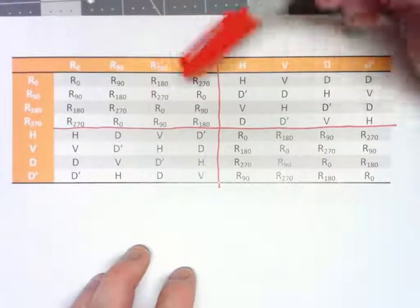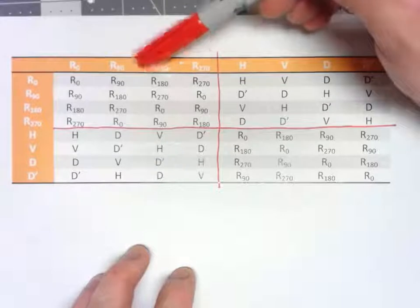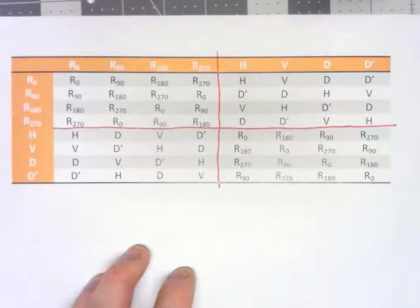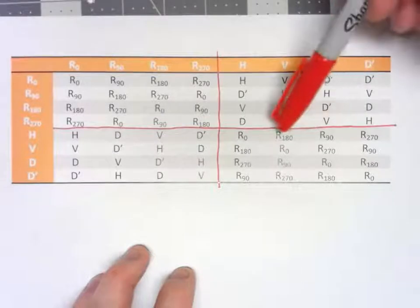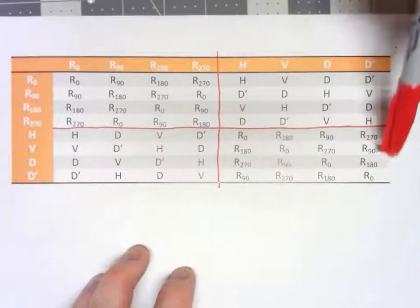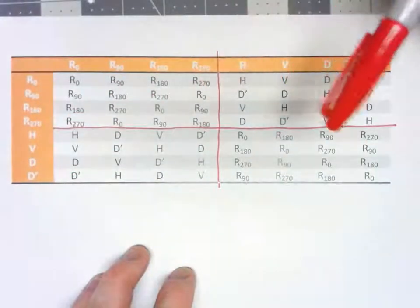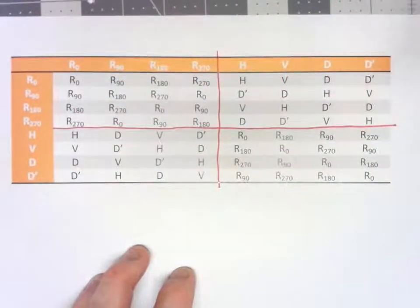This one should be completely clear. If you do a rotation, then do another rotation, you end up with a rotation. Perhaps a little bit less obvious is the fact if you do a reflection, then do another reflection, you always get a rotation there as well.